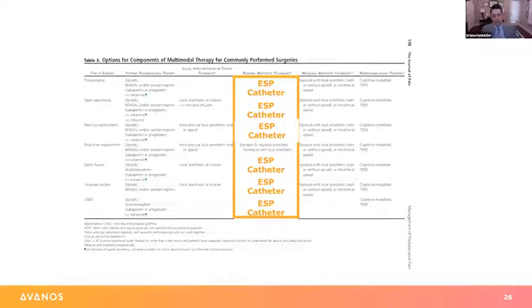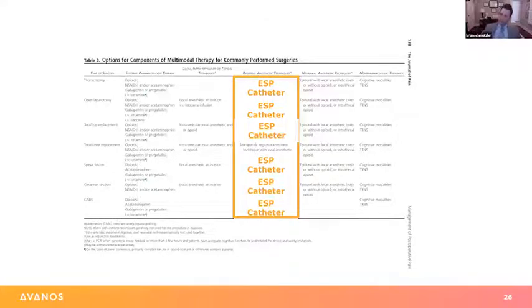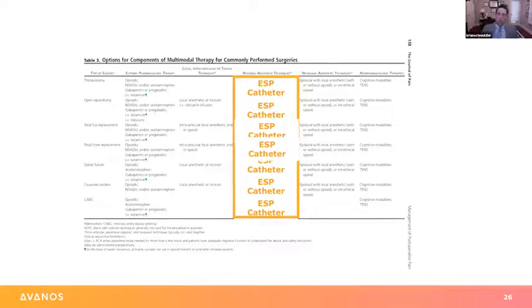We're starting to use ESP catheters for our anterior total hip replacements. We still do femoral nerve infusion catheters for our standard posterior hips, but the ESP catheters gave us the ability to place them preoperatively for anterior hip replacements. Patients do quite well. The pain relief is equivalent, maybe even better than the femoral infusion catheters. We do a lot of these outpatient — the patient goes home with the ESP catheter, pulls it out at home, and does quite well. Surgeons have been happy with these too. For total knee replacements we don't use ESP catheters but there is now some evidence in the literature that they may be helpful.